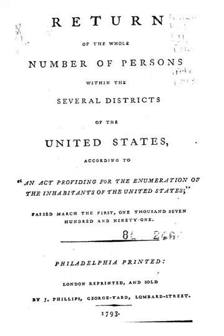The 1850 Census saw a dramatic shift in the way information about residents was collected. For the first time, free persons were listed individually instead of by head of household. There were two questionnaires — one for free inhabitants and one for slaves. The question on the free inhabitants schedule about color was a column to be left blank if a person was white, or marked 'M' if a person was mulatto. Slaves were listed by owner and classified by gender and age, with color marked 'B' if black and 'M' if mulatto.